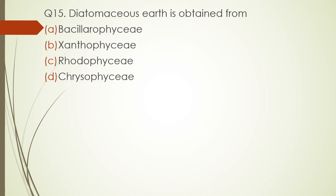Question number fifteen. Diatomaceous earth is obtained from: Bacillariophyceae, Xanthophyceae, Rhodophyceae, or Chrysophyceae? The correct answer is option A — Bacillariophyceae.